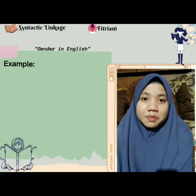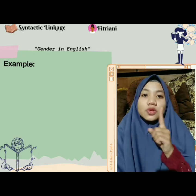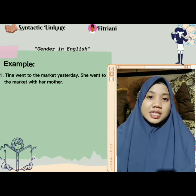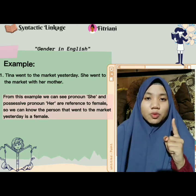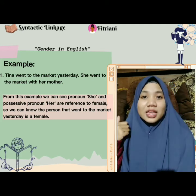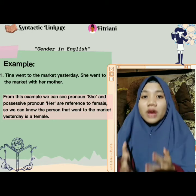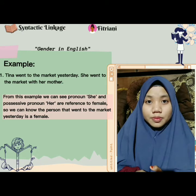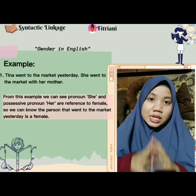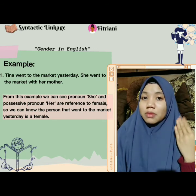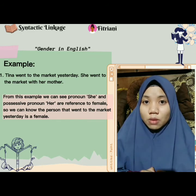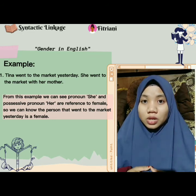I will give some examples to help the audience understand gender in English. The first example: 'Tina went to the market yesterday. She went to the market with her mother.' From this example, we can see that pronoun 'she' and possessive pronoun 'her' are a reference to female. So we can know that the person who went to the market yesterday is a female, and we can also identify that Tina is a female. Kita bisa melihat bahwa pronoun she dan possessive pronoun her merujuk pada perempuan, sehingga kita bisa mengetahui bahwa Tina itu adalah seorang perempuan.